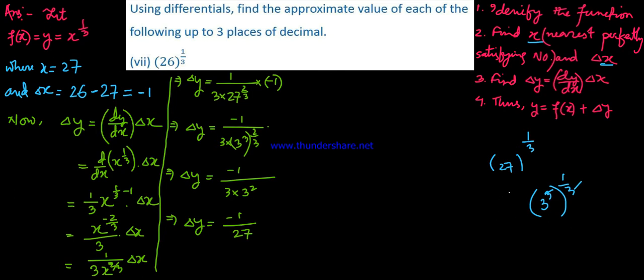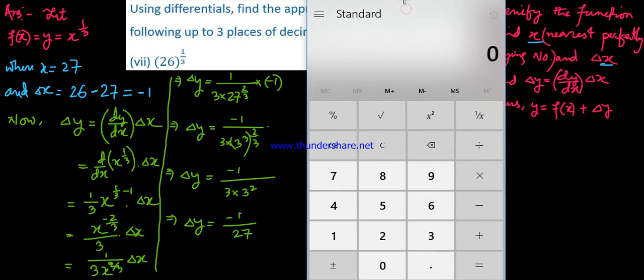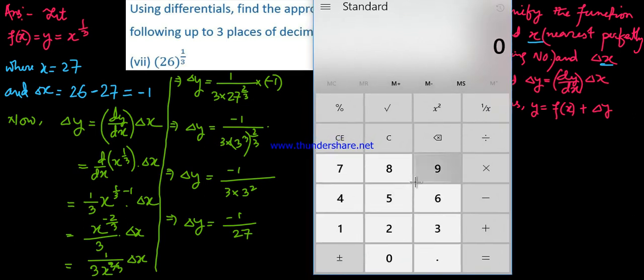This equals minus 1 by 3 times 3 squared, which is 9, times 3, giving 27. So delta y equals minus 1 by 27, which equals approximately minus 0.037 to three decimal places.